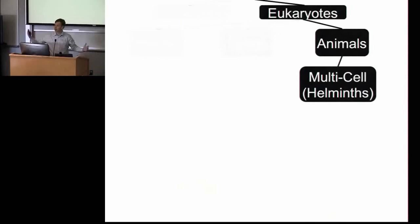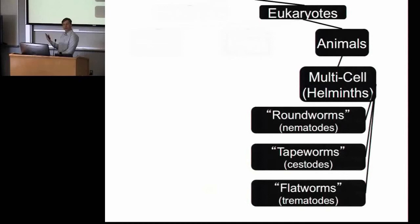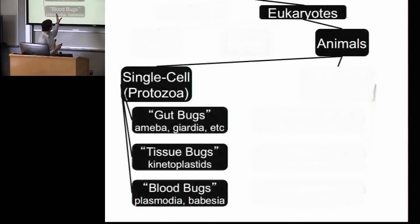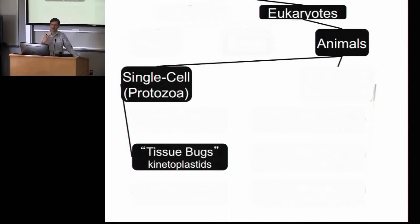Fungi are interesting but we don't have time to talk about them. Among animals, I split them into two groups: those with more than one cell, and those with one cell. The multicellular ones are the helminths or worms — divided by shape: round, tape-like, or flat. Among the single-celled organisms, I divide them by how they get around. Do they move through your gut, into your tissue, or into your blood? Right now we're talking about the tissue bugs. This is a simple organizational rubric — helpful when you're presented with a museum of oddities.